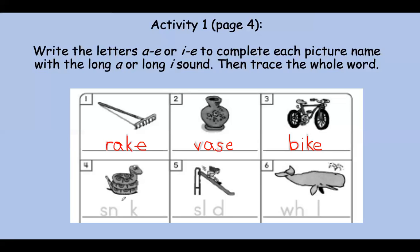Nice job. Let's go down here. I'm sure you guys know what this is. This is a snake. Let's say it slowly. Snake. What do you hear? Do you hear the long A sound or the long I sound? Say it again. Snake. You heard it — it is the A sound. So let's write in our A, and there's our consonant, and then we write our E. Now let's trace snake.